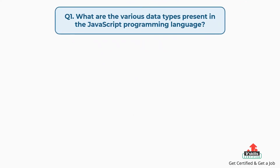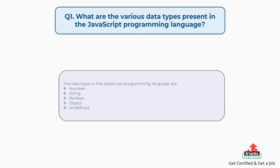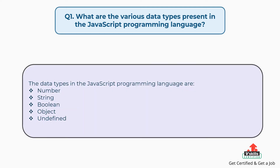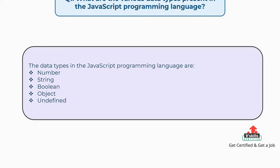Question number one: what are the various data types present in the JavaScript programming language? The data types in JavaScript are number, string, boolean, object, and undefined.